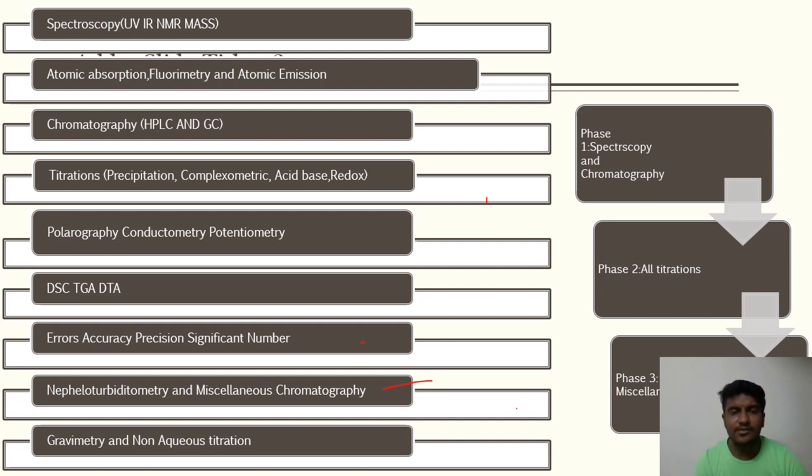The next one we have is gravimetry. In gravimetry, you measure the amount. It can be either volumetric or precipitation gravimetry. You measure the amount or you let the substance get volatilized.